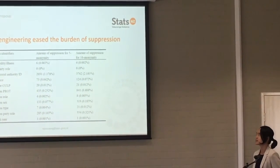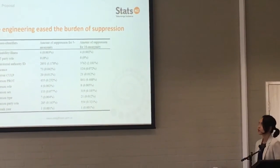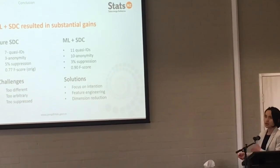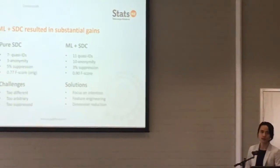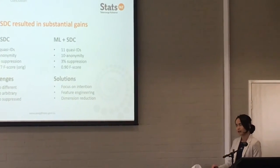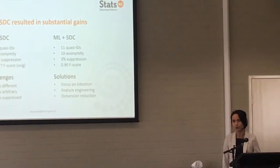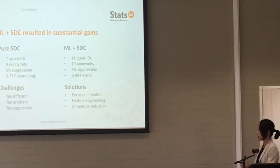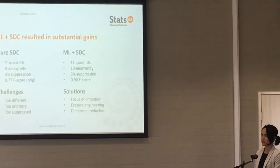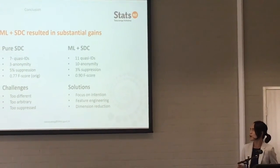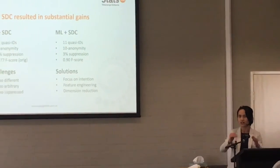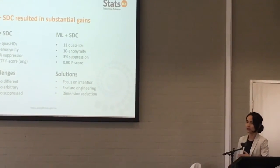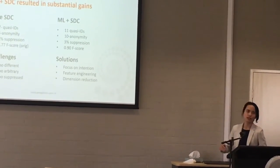Using these methods to balance risk and utility, our F-score increased from 0.77 to 0.9, an improvement of over 10%. Because we did a lot of dimensionality reduction, the information detail was greatly reduced, so the risk of k-anonymity violation is much lower. In the end, we only need about 3% suppression to achieve even 10-anonymity. Compared to the traditional approach — which disclosed about 7 quasi-identifiers satisfying 3-anonymity with 5% suppression — our approach releases 11 quasi-identifier variables satisfying 10-anonymity with only 3% suppression, with a better prediction accuracy.